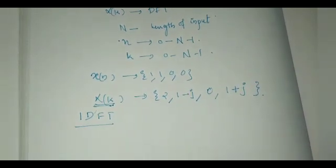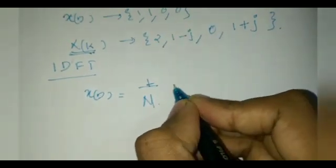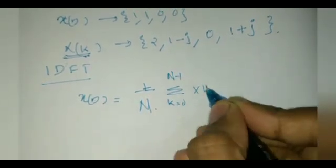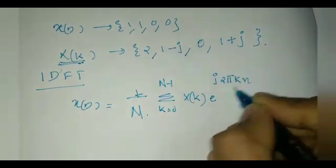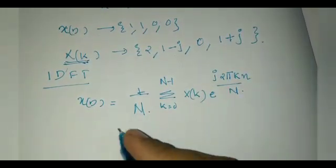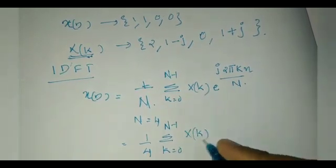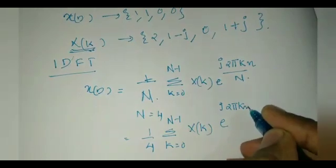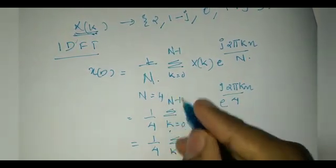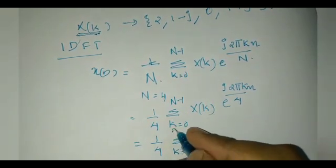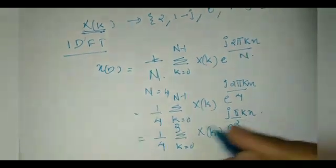I am going to write the generalized equation: x of n equals 1 by N, sigma k equals 0 to N minus 1, x of k into e raised to j 2 pi k n by capital N. Here N is 4, so the equation becomes 1 by 4, sigma k equals 0 to 3, x of k, e raised to j 2 pi k n by 4. In reduced form this becomes 1 by 4, sigma k equals 0 to 3, x of k, e raised to j pi by 2 times k n. This is the reduced equation.